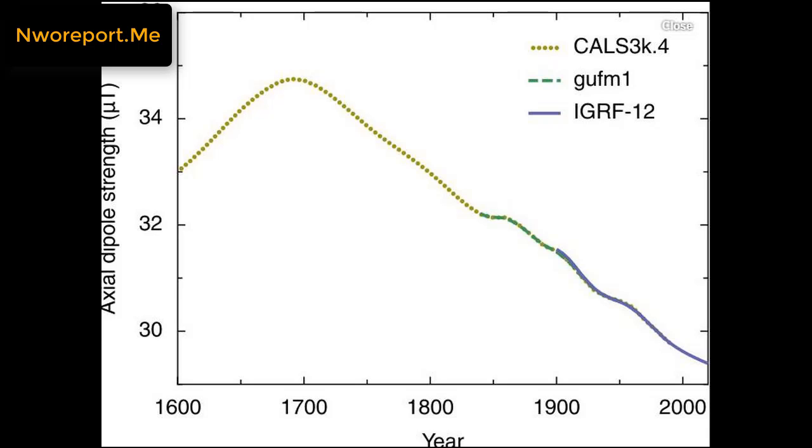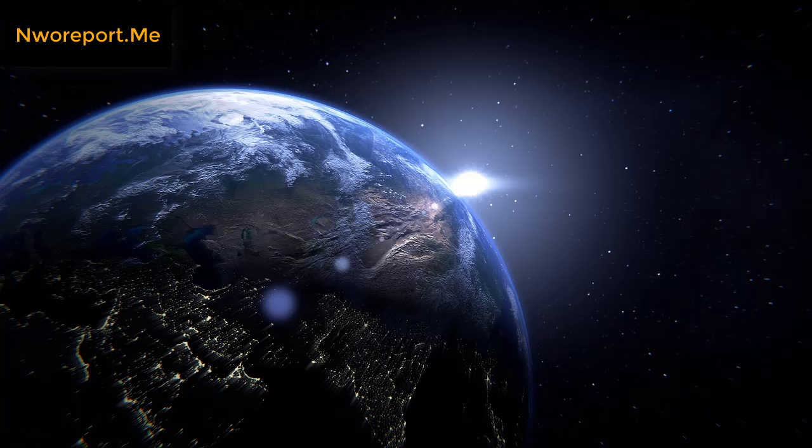Now, in case some of you didn't quite get that, 5% per decade is 10 times faster than 5% per century. Now, if the rate of decay continues at this pace, or if it speeds up even more, we could be looking at the human race being wiped out.